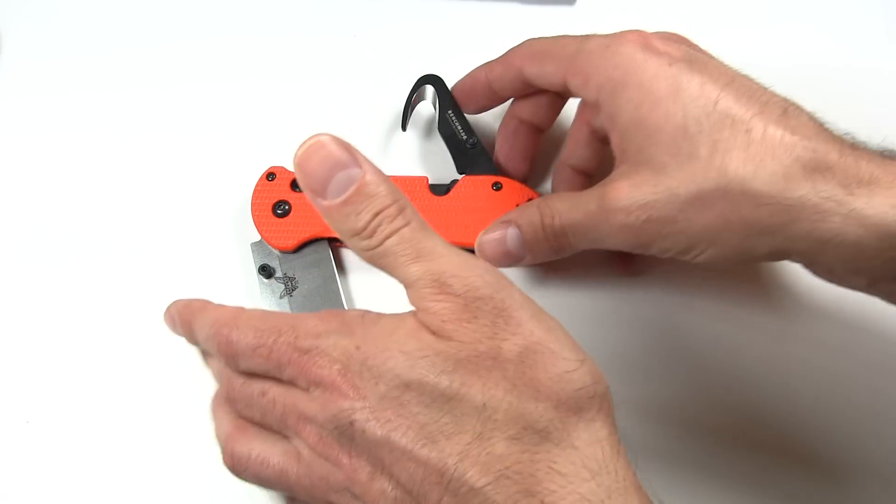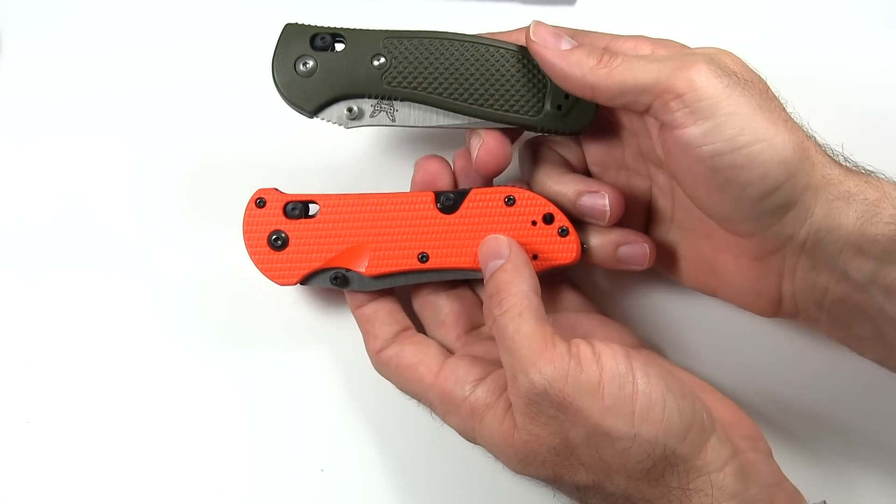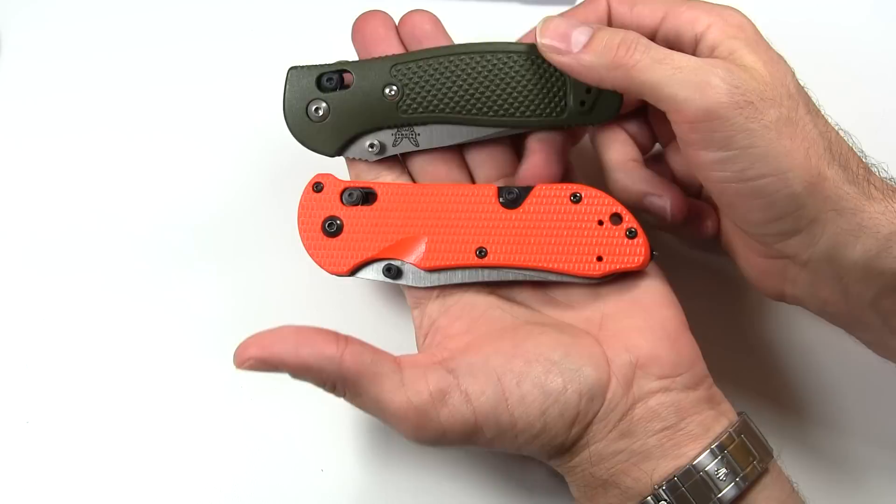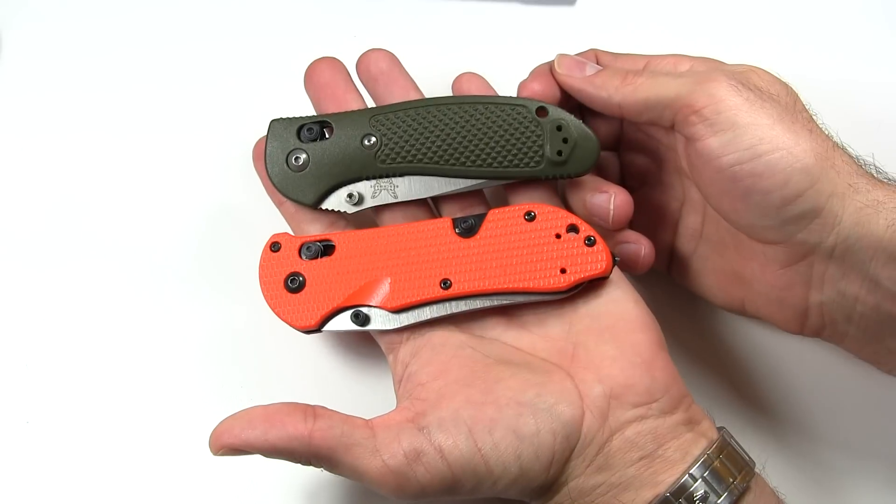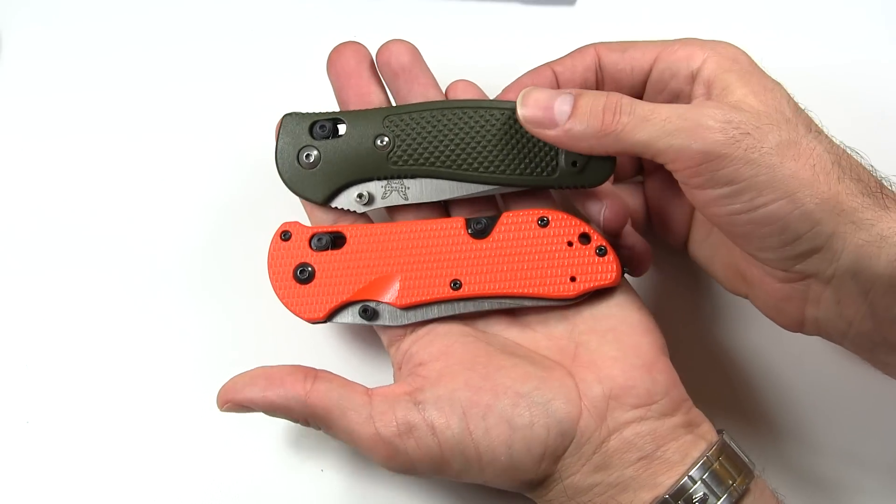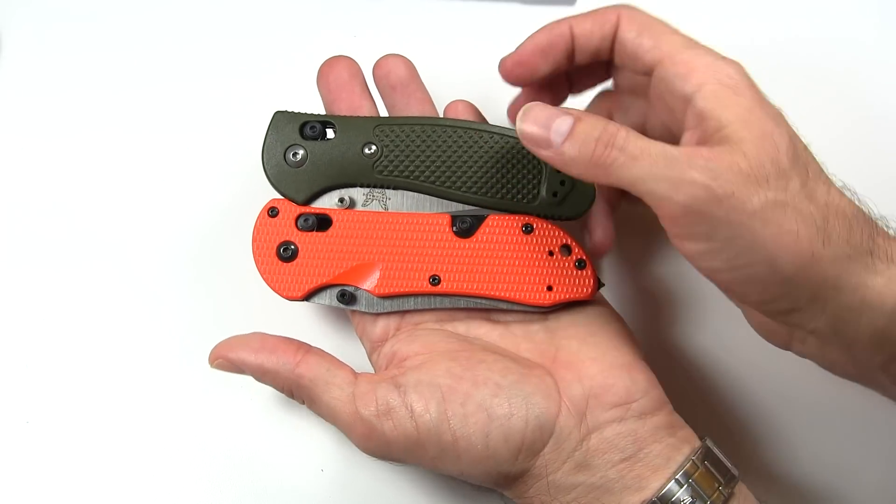It's not a small knife, and I'm just going to start with some of the size. And for comparison, I'm going to throw in this full-size Griptilian, because it's a knife that a lot of people may already own. You can get an idea of comparison between the two, because they're pretty close in size, although the Triage is just a little bit longer.